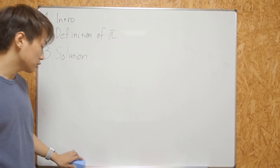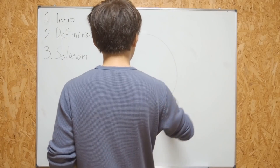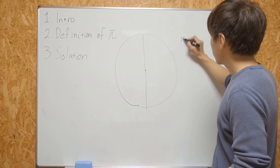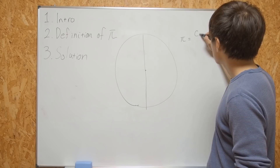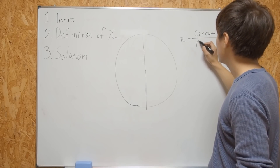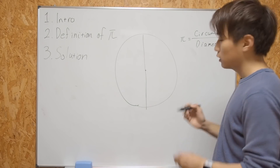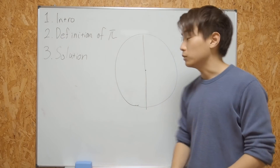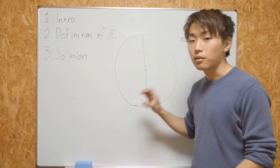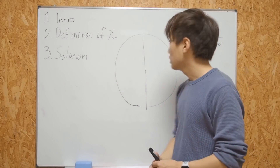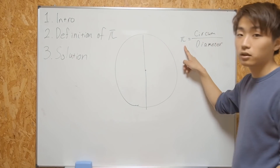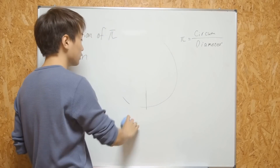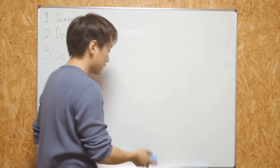First, we have to understand the definition of pi. Sadly, not many people know the exact definition. If you draw a circle, there will be a diameter and a circumference — pi is defined as the circumference divided by the diameter. Because every single circle looks exactly the same, even if you have a diameter of one centimetre or 500 metres, the ratio of circumference to diameter is exactly the same. So pi is a constant, and that constant is known to be 3.1415, infinitely continuing. That's the definition of pi.